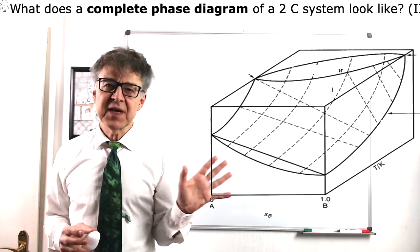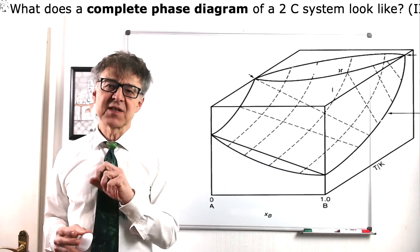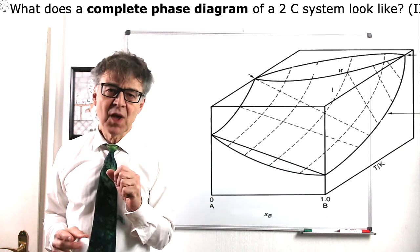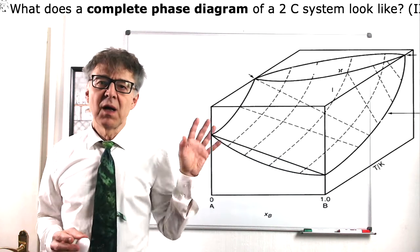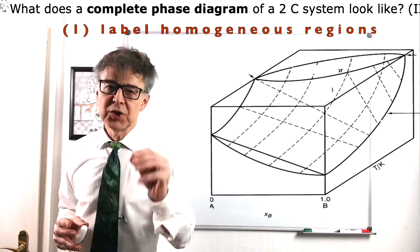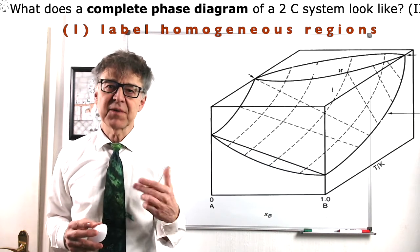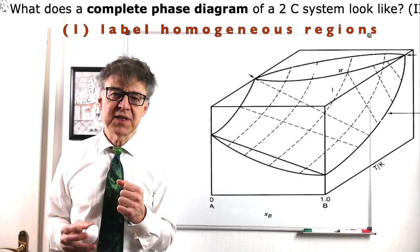At first glance, many phase diagrams might look confusing, but here is a guideline for discussing phase diagrams. First of all, label the regions in the diagram which are homogeneous, which consist of a single phase, for example, the liquid phase region and the gas phase region.